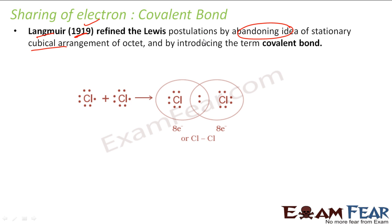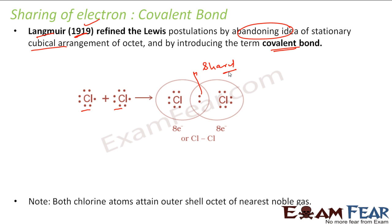Langmuir told that the covalent bond is formed by sharing of electrons. For example, chlorine has 7 electrons and neither atom is willing to give electrons away, so they share. This chlorine assumes it has 6 plus 2 = 8 electrons because these electrons are shared. Both chlorines achieve the noble gas configuration.